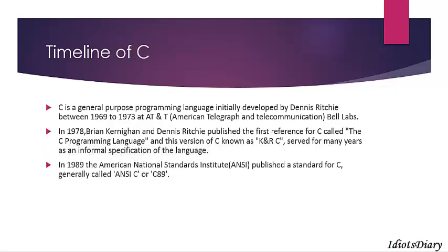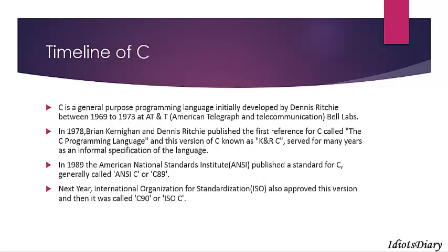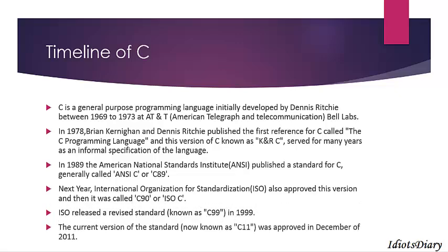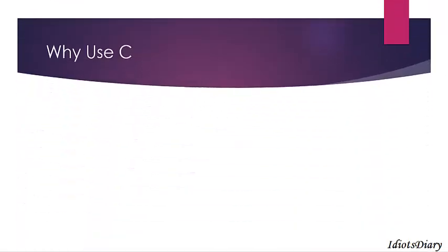In 1989, the American National Standard Institute published the standard for C, generally called ANSI C or C89. In the next year, the International Organization for Standardization also approved this version, called C90 or ISO C. ISO revised the standard of C in 1999, called C99, and the latest version of C was published in 2011, called C11.